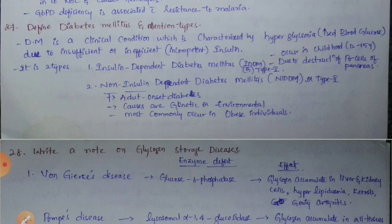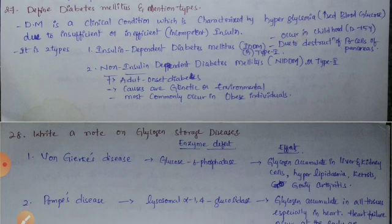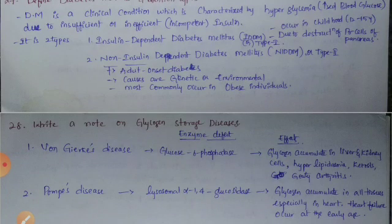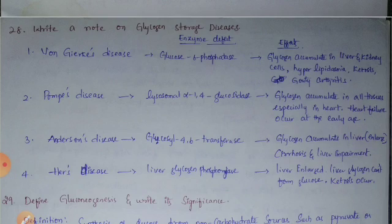IDDM, also known as Type 1, occurs in childhood at the age of 12 to 15 years due to destruction of beta cells of the pancreas. Non-insulin-dependent diabetes mellitus (Type 2) occurs in adults, due to genetic or environmental factors, and most commonly occurs in obese individuals.